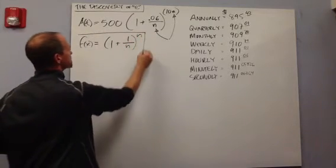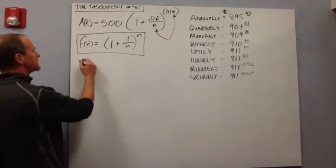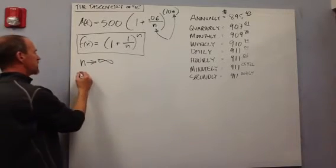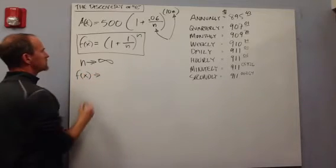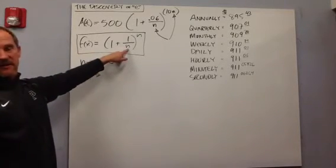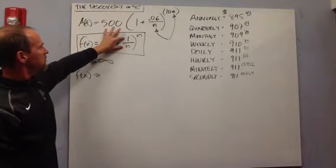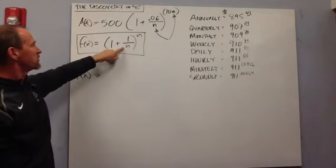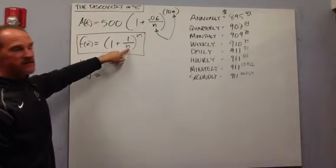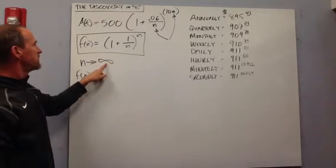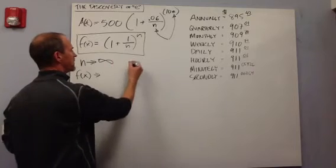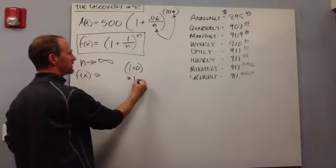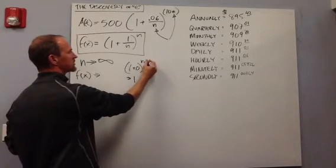This is a different way of thinking about it. If we let n go to infinity — n getting bigger and bigger — what happens to our function value? As n gets very large, 1 over n gets closer and closer to 0. So 1 plus 1 over n gets closer and closer to 1. But the exponent n is getting closer and closer to infinity.